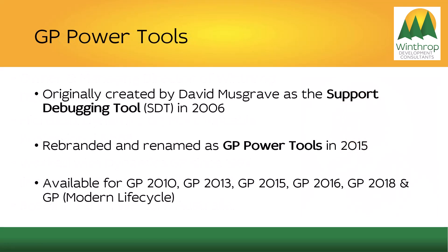GP Power Tools was originally known as the Support Debugging Tool and was created starting in 2006. When I left Microsoft in 2014, I was able to get the rights to it, and it was rebranded and re-released as GP Power Tools in 2015. It is available for versions of GP from GP 2010 onwards, and the latest build 31 is only available for the modern lifecycle builds of 18.2 and later.